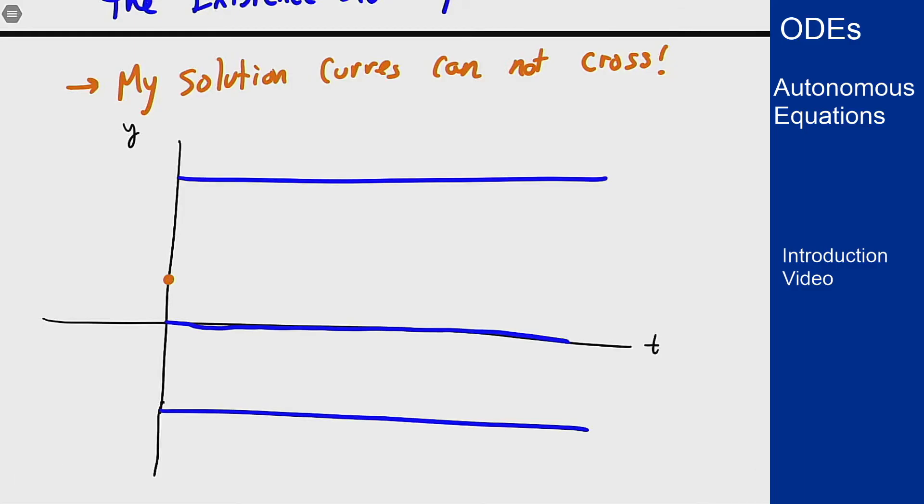Well I know I can't cross solution curves which means this solution has to be trapped between 0 and 5. It can't escape. Because those solutions if it were to try to escape it would then have to cross over that solution line and that can't happen by existence and uniqueness.